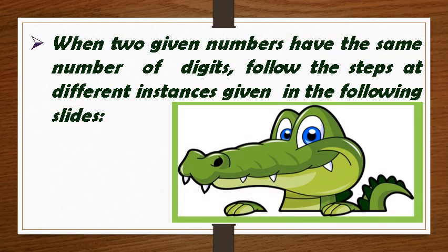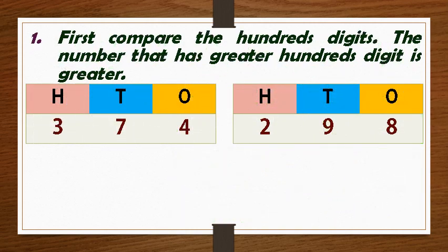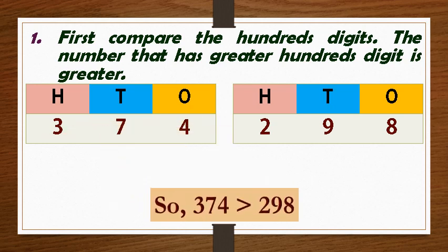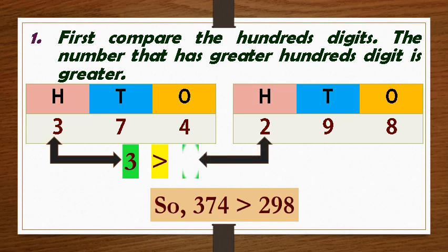When two given numbers have the same number of digits, follow the steps at different instances given in the following slides. Children, whenever two numbers having three digits are assigned, first compare the hundreds digits. The number that has greater hundreds digit is greater. Here, 374 is greater than 298 because hundreds digit, i.e. 3 in 374 is greater than hundreds digit 2 in 298.